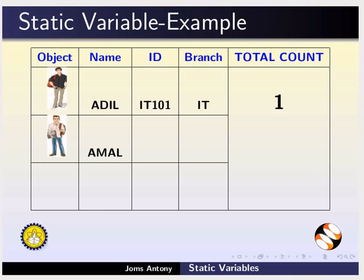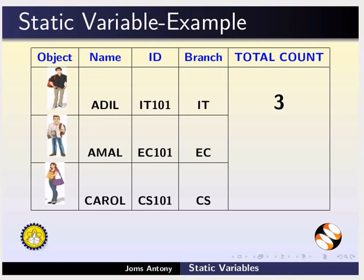Similarly, when the second student Amal gets enrolled, total count is updated to 2. When the third student Karol gets enrolled, total count is updated to 3. Now we can identify that the variable total count is common to all the objects and has a single value.